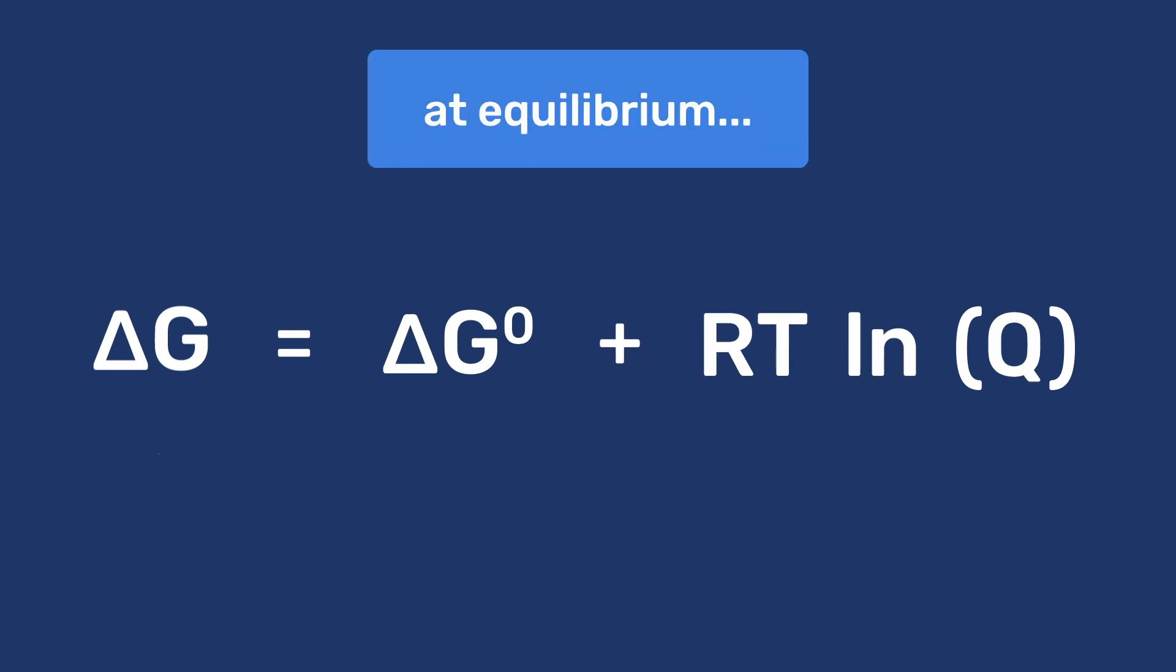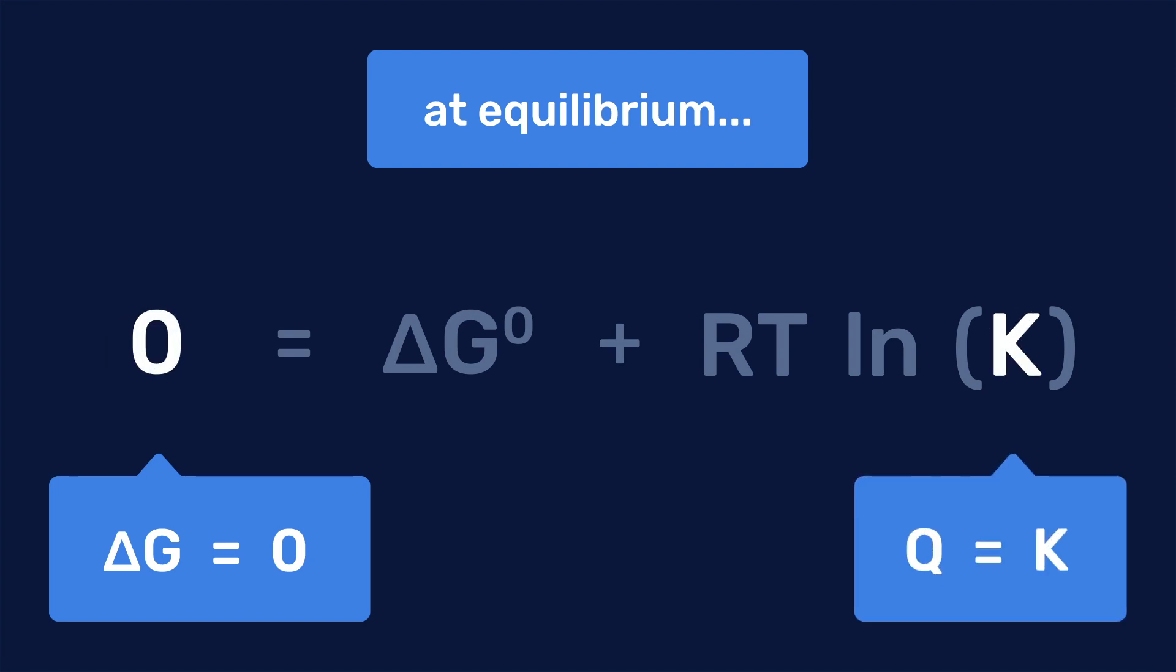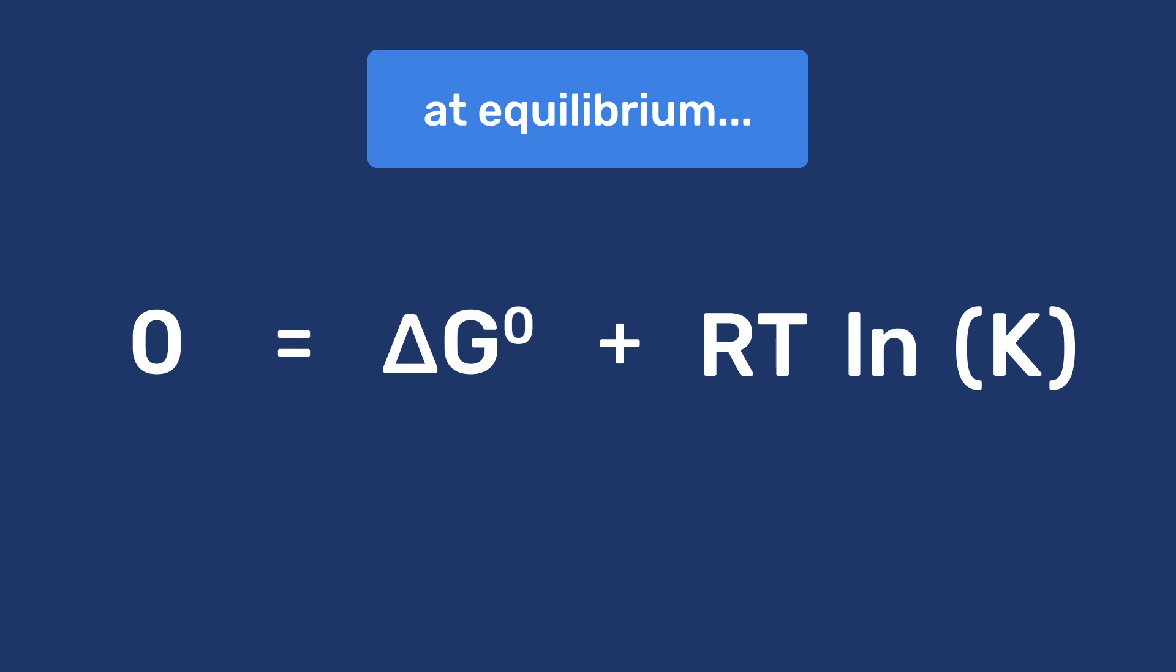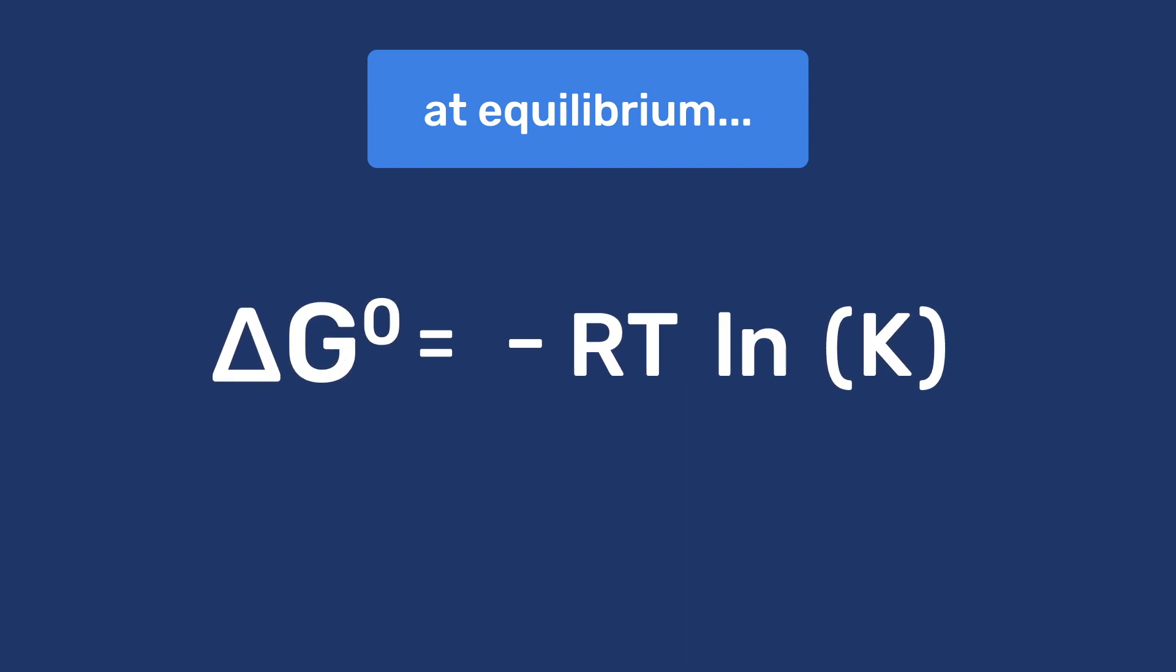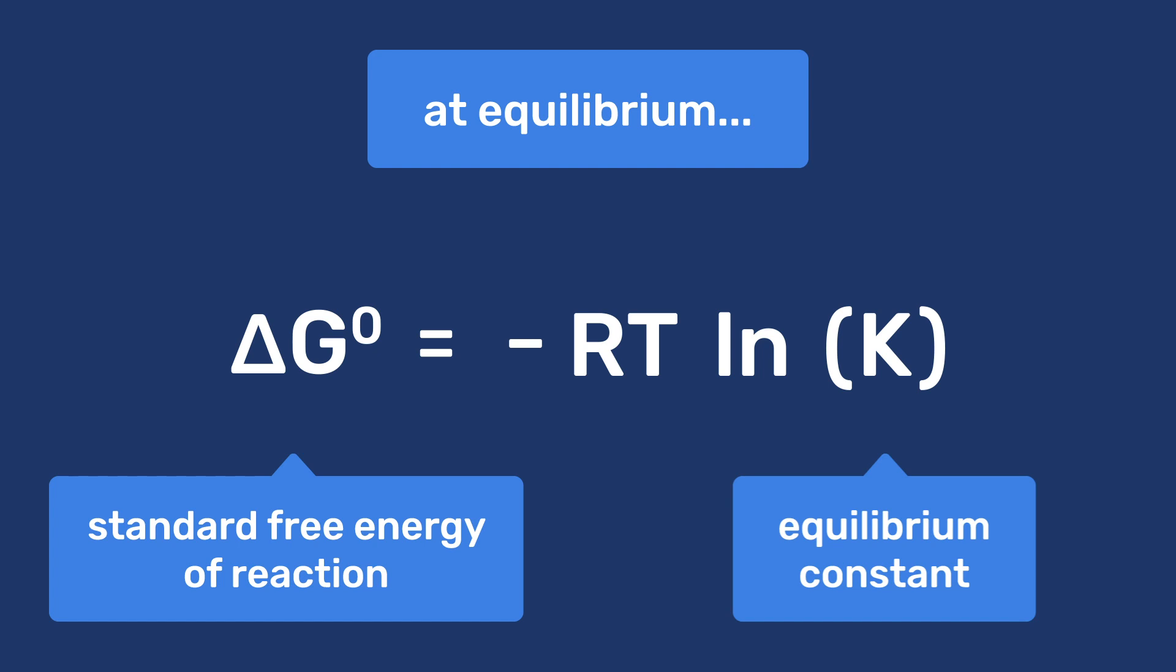At equilibrium, ΔG is 0 and Q is replaced by K. So, ΔG0 equals minus RTlnK. This establishes a link between the equilibrium constant K and the free energy, specifically the standard free energy of reaction, ΔG0.